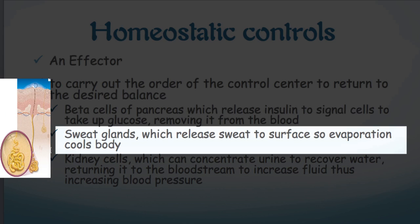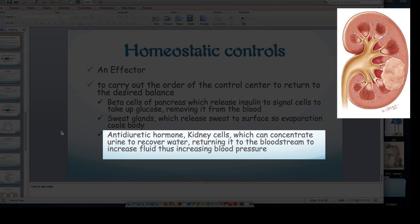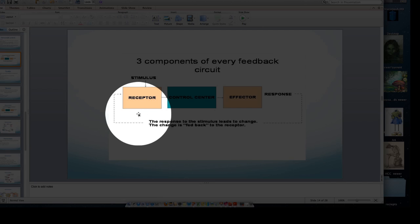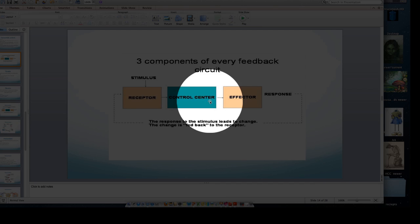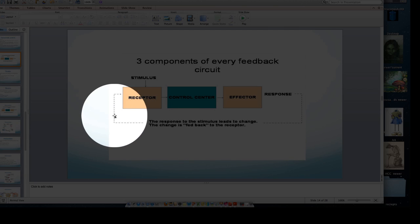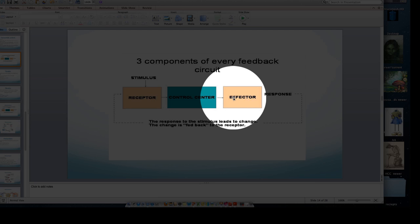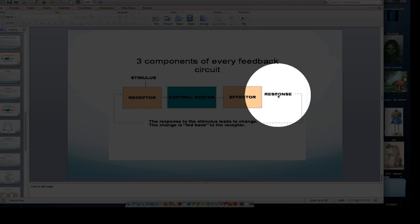Sweat glands will respond to the brain's command and release sweat to the surface of the body, so evaporation will cool us. If blood pressure was too low, an endocrine organ could release antidiuretic hormone, which would go to kidney cells; kidney cells would concentrate urine, recovering water — that water winds up in the bloodstream, making more volume, which raises blood pressure, keeping us from passing out. So again we have our receptor, our control center, and our effector, working together to keep us in balance: the receptor senses a change, lets the control center know, the control center orders the effector, which creates a response.